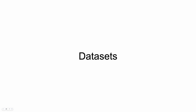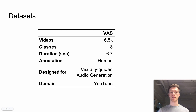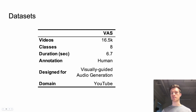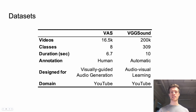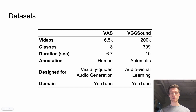Let's briefly talk about the datasets. The first one is VAS. It consists of eight classes spread across a bit less than 17k YouTube videos. The dataset is well-curated due to human annotation and designed specifically for visually-guided audio generation. The second dataset is VGGSound. It is a magnitude larger than VAS, but it is noisy due to automatic annotation. VGGSound has over 300 classes of 10-second videos from YouTube. To the best of our knowledge, we are the first to use VGGSound for this problem.